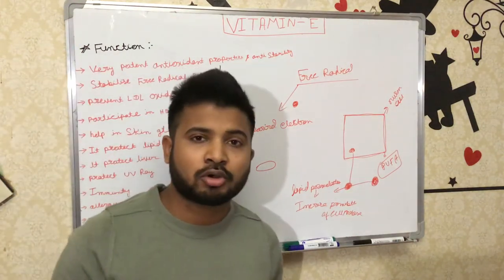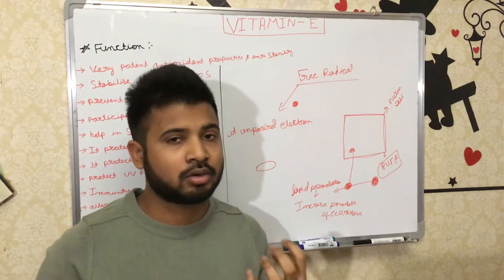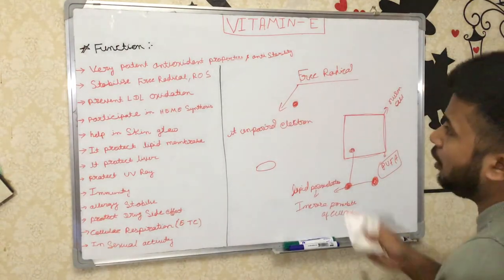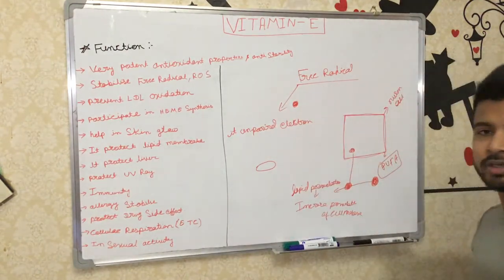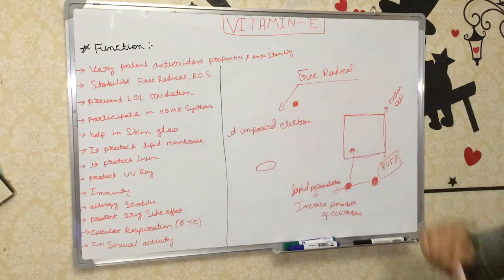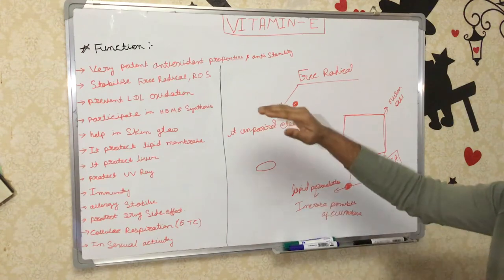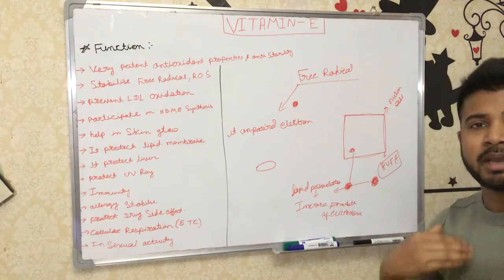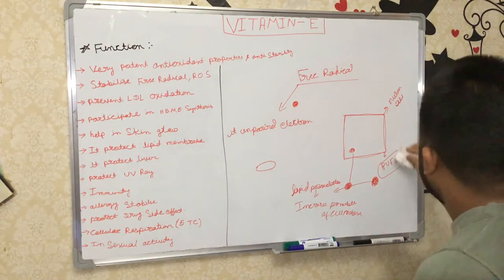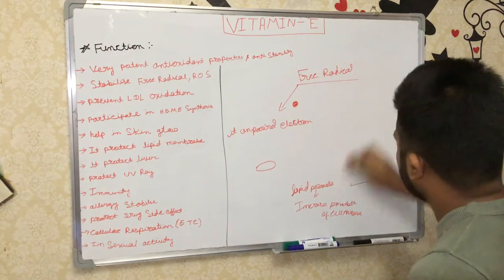That is why free radicals are very toxic molecules that must be caught by Vitamin E or antioxidants. Antioxidant properties are not only found in Vitamin E — they are also found in Vitamin C, Vitamin A, and some other products. Now let's discuss some other functions. Free radicals and reactive oxygen species are both very dangerous elements for the human body.